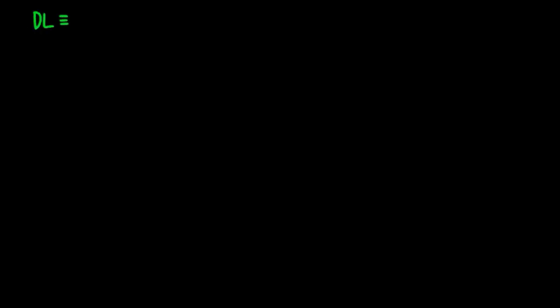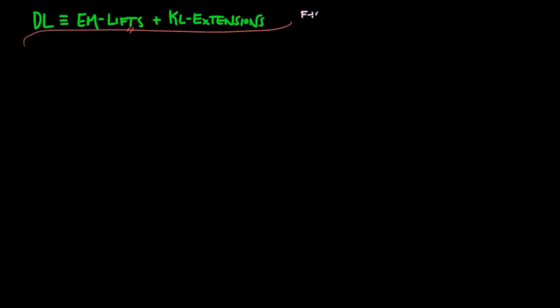In this video, we will show that distributive laws are equivalent to particular Eilenberg-Moore lifts and Kleisli extensions. We'll use the adjoint situations F, G and F', G' with induced monads H and H' respectively.